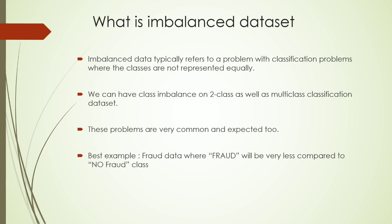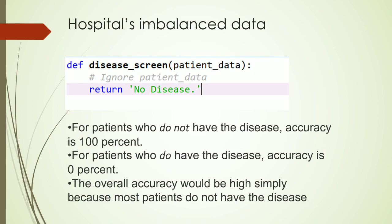Today we will look at some examples and techniques to solve class imbalance. Let's work with hospital data. Say your client wants to predict a disease based on biological inputs from patients, but only 8% of patients have screened positive for the disease. If we write a simple function that always returns 'no disease', accuracy for non-diseased patients is 100% but for diseased patients it is 0%. The overall accuracy is high but we are not detecting the disease — giving us misleading results. This is the effect of class imbalance.